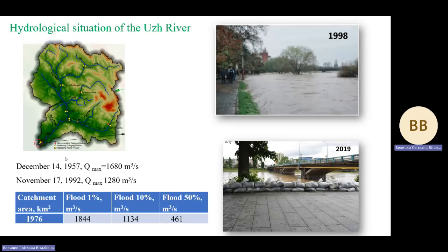Floods in the Ush river are observed both in the summer and in the cold period, several times a year. The highest flood occurred in December 1957, and the extreme flood of the last 15 years was in November 1992. This flood caused significant damage in the center of Ushgorod.